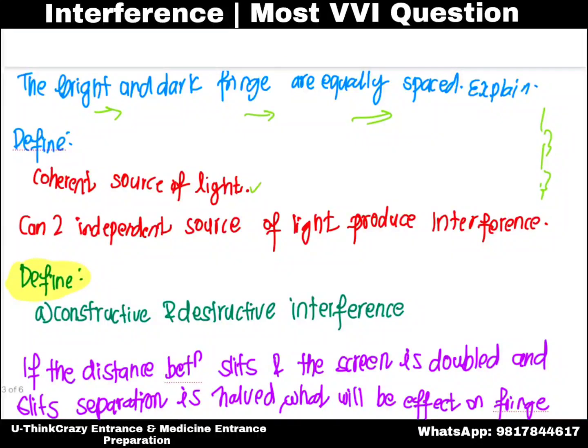Define coherent source of light — what is a coherent source of light? Can two independent sources of light produce interference?